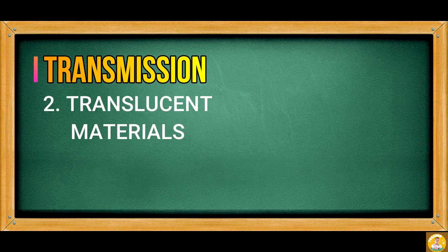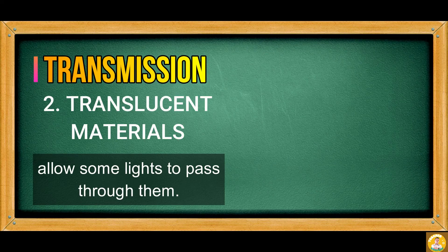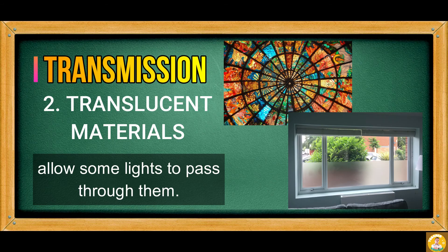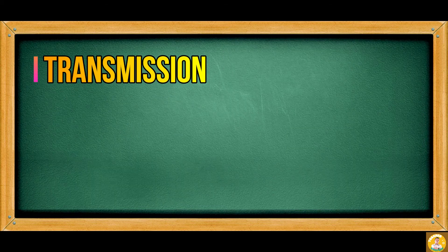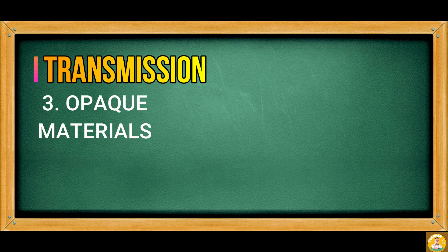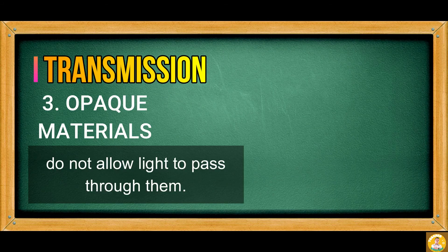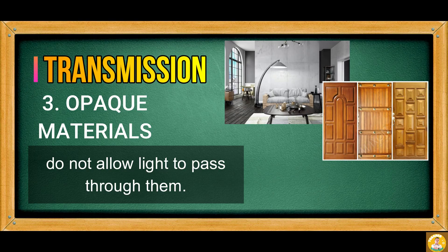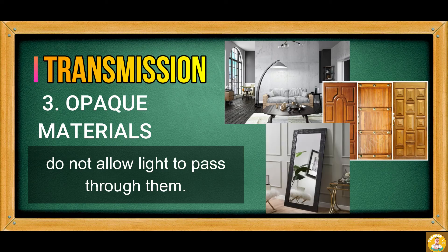Translucent materials allow only some light to pass through them — stained glasses and frosted windows are examples of translucent objects. Opaque materials do not allow light to pass through them at all. Concrete walls, wooden doors, and mirrors are examples of opaque objects.